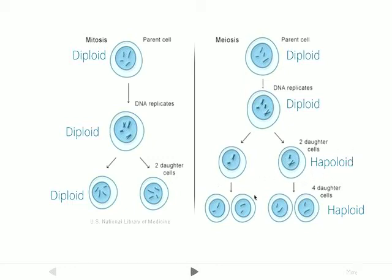Then we go through meiosis II, and you're left with four daughter cells. Each of the daughter cells has two chromosomes — even though they're not Xs, they're still individual chromosomes. So we're left with four cells with two chromosomes each. That's a half set of chromosomes in each, so we call them haploid cells.